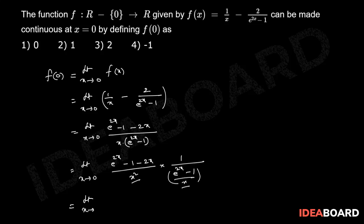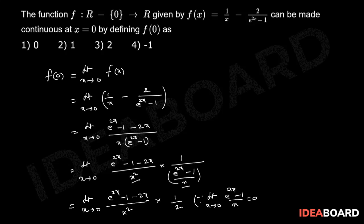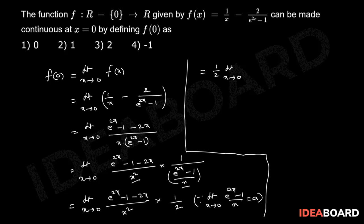This equals limit x tends to 0 of [(e^(2x) - 1 - 2x) / x²] into 1/2, since the standard limit result gives: limit x tends to 0 of (e^(ax) - 1)/x = a. So we have 1/2 into the remaining limit, and now we use the Taylor expansion of e^(2x).